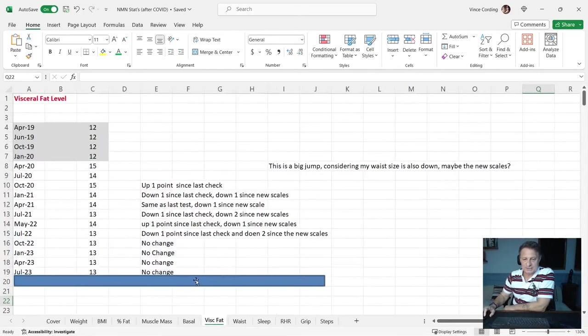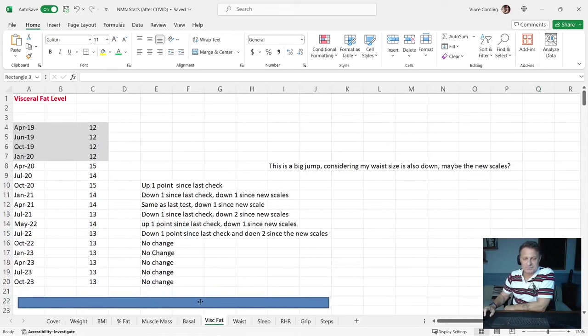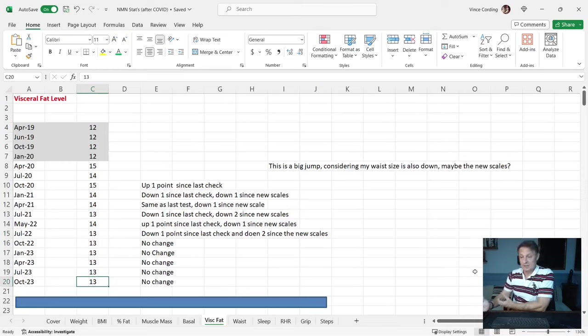Visceral fat was 13, this time it is 13. I mentioned this before, this is extremely frustrating. It's been 13 now since July 2022, even though I'm losing body weight and losing fat mass as well. I think this may be down to the accuracy. This could be 13.99 in July 2022 and it could be all the way down to 13.01, which will be great to see as it changes. But all it's showing me is just the raw number of 13. So although it's good, it's slightly disappointing really.